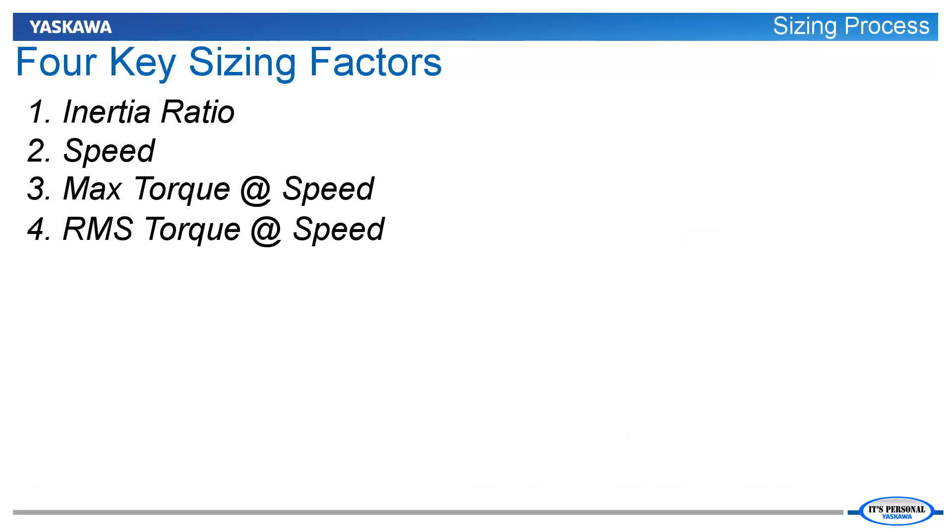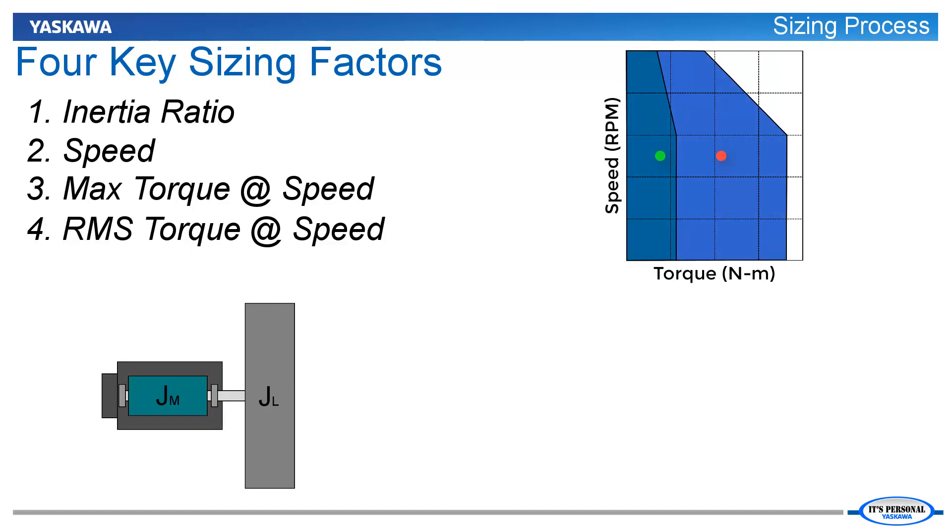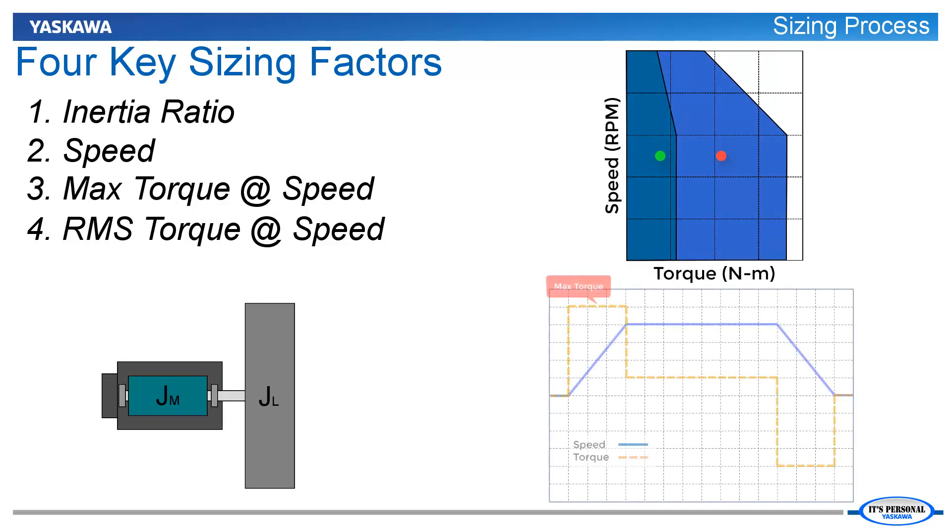While all of these factors are important, the core process in servomotor sizing involves four key factors. Given that the inertia ratio and motor speed are appropriate for the application, both the max torque and the RMS torque must lie within the motor's capability. The remainder of this eLearning module will discuss this process in more detail.